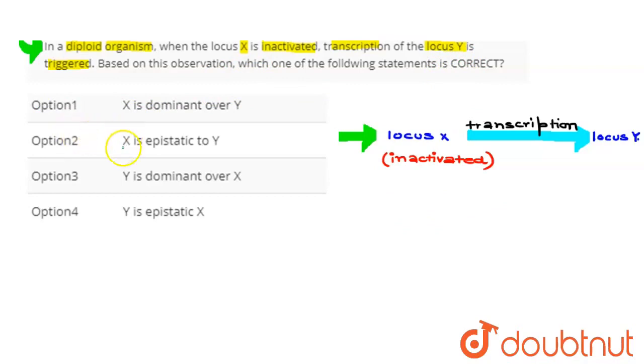Right, so first option: X is dominant over Y. Second, X is epistatic to Y.